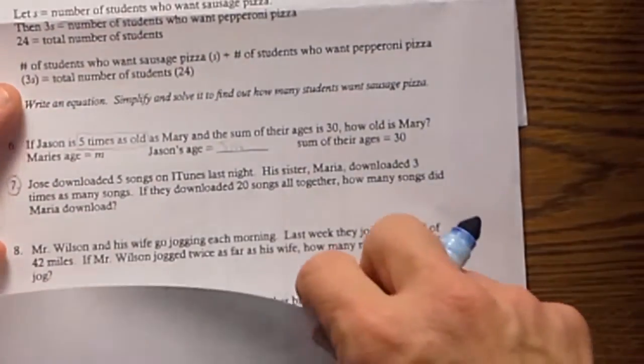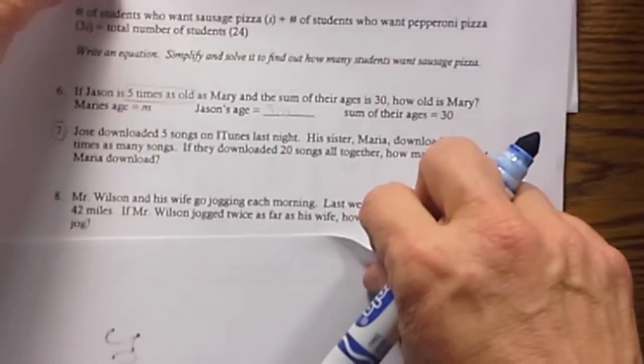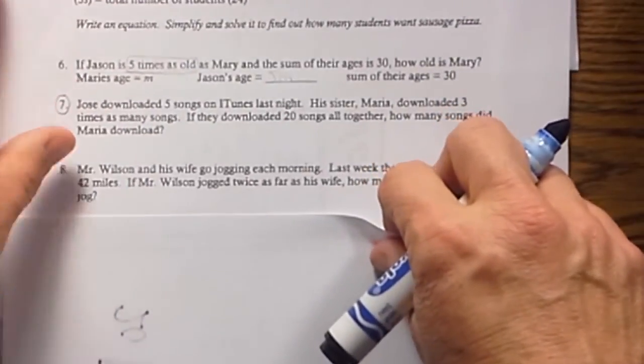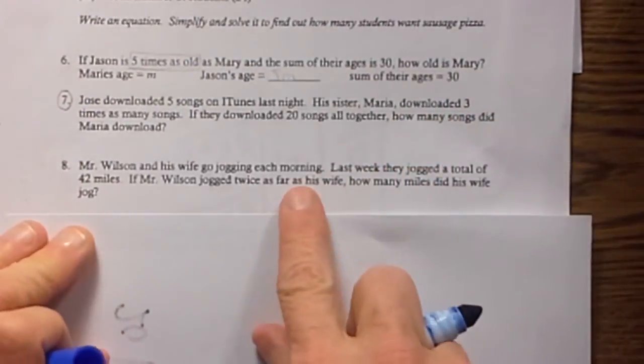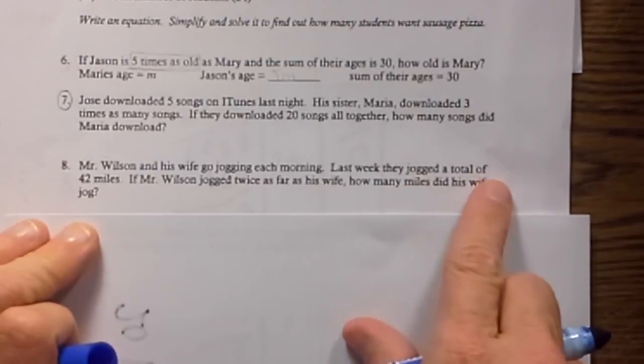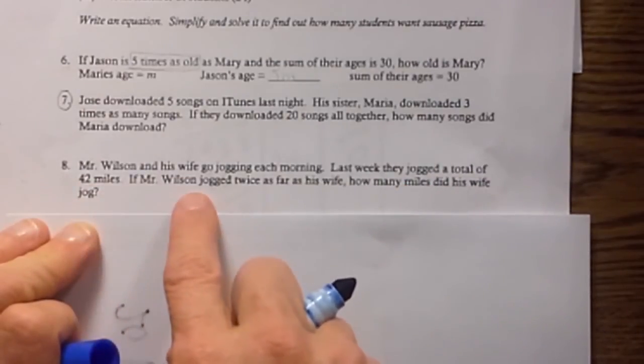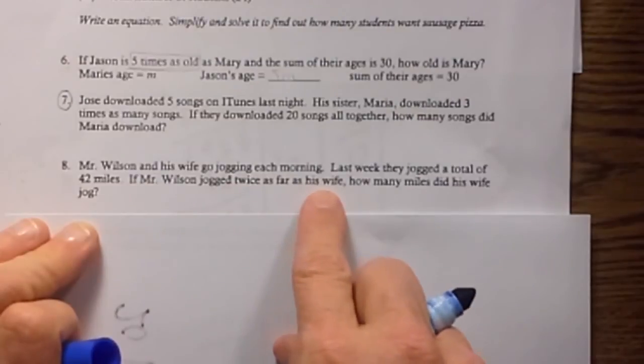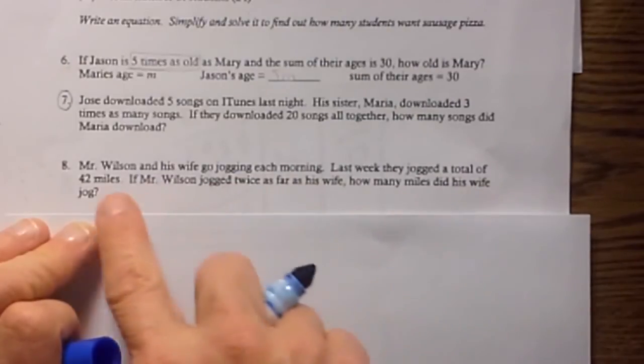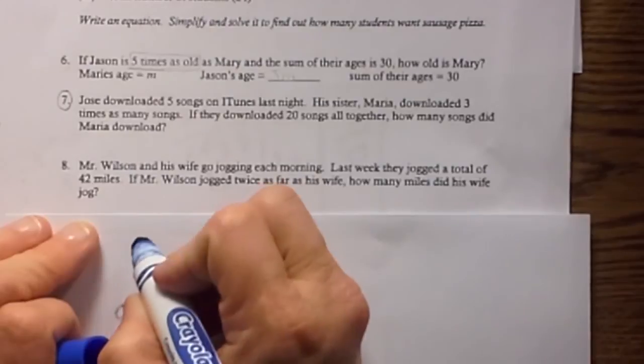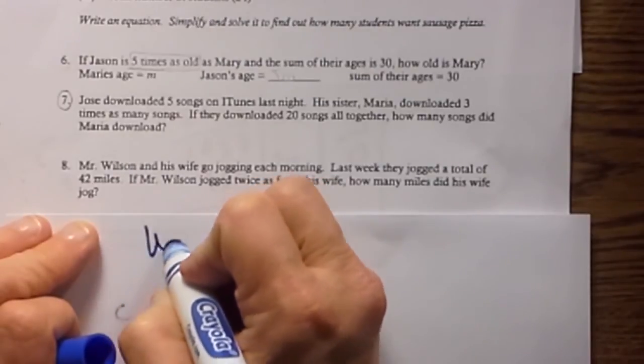Okay, let's do one more of these. Okay, we have Mr. Wilson and his wife go jogging in the morning. Last week they jogged a total of 42 miles. If Mr. Wilson jogged twice as far as his wife, how many miles did his wife jog?